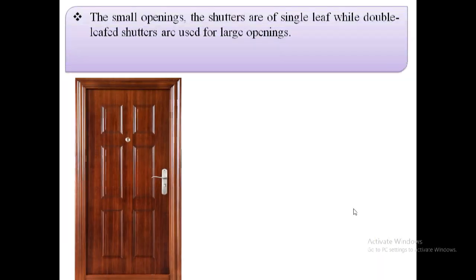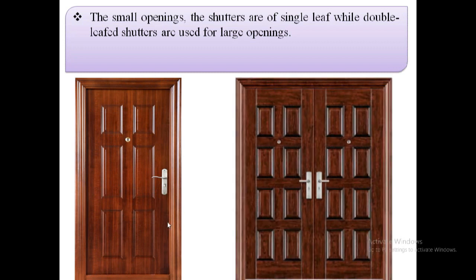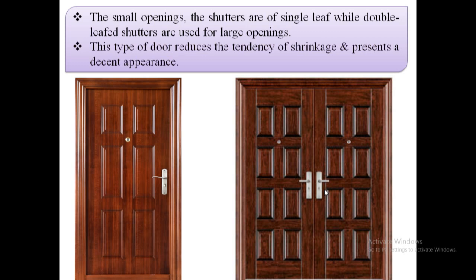For small openings the shutters are of single leaf as shown in this image, while double leaf shutters are used for large openings. The first image shows a single leaf and the second image shows double leaf shutters. This type of door reduces the tendency of shrinkage and presents a decent appearance.